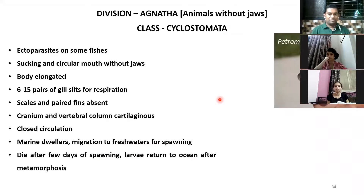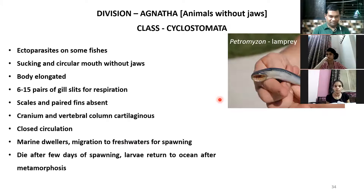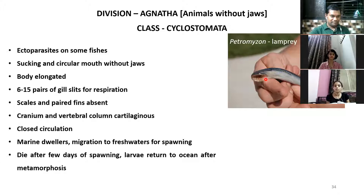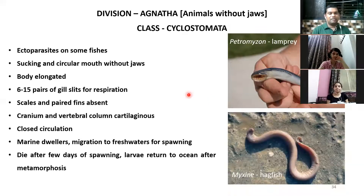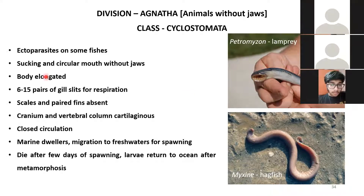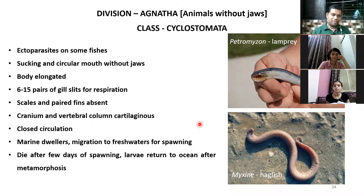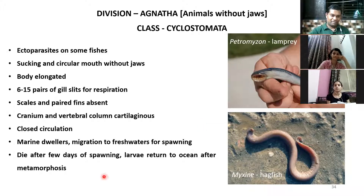An example is Petromyzon, commonly called lamprey — you can see the circular mouth without any jaw. It is an ectoparasite with an elongated body. The other example is Myxine, commonly called the hagfish. So remember: Petromyzon is called lamprey and Myxine is called hagfish. These are the two examples of Cyclostomata.